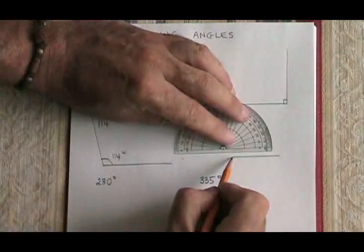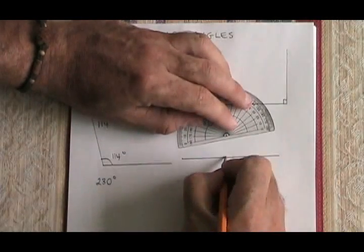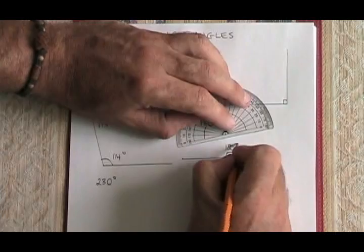All I'm doing when I connect them, the vertex to that dot, is I'm continuing the straight line I started with. So this is a straight angle or a 180 degree angle.